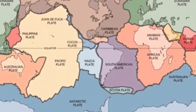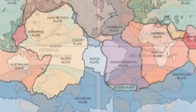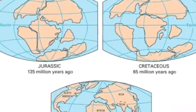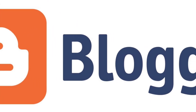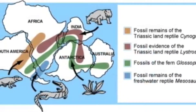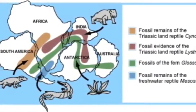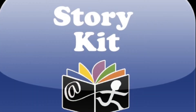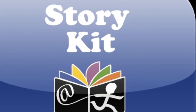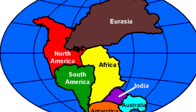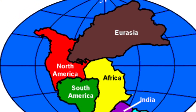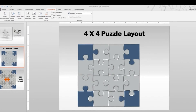The unit begins with an exploration of Alfred Wegener's theory of continental drift. Students will create a blog post summarizing Wegener's evidence for continental drift, compare and contrast related fossils found on different continents, and summarize their findings using the Story Kit application. They will also construct an animated puzzle of the supercontinent Pangea using a Microsoft PowerPoint tutorial.